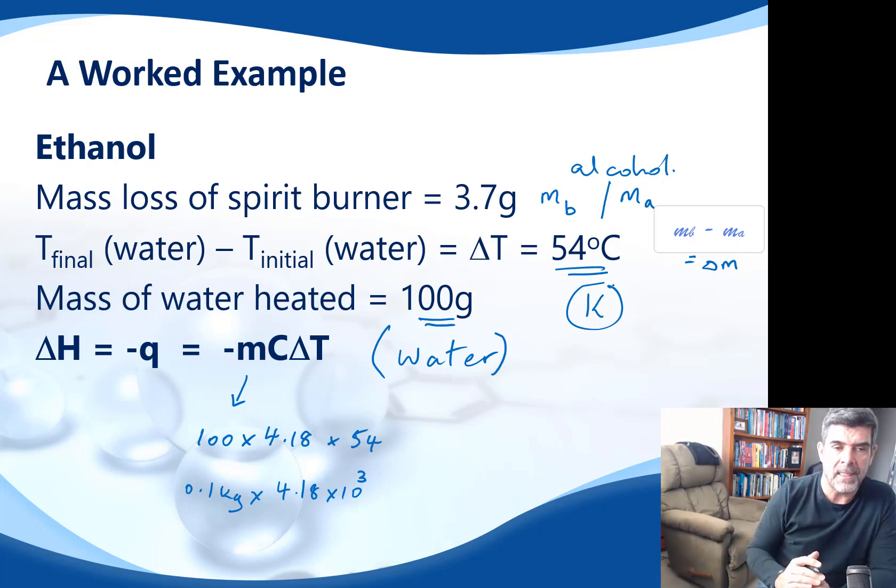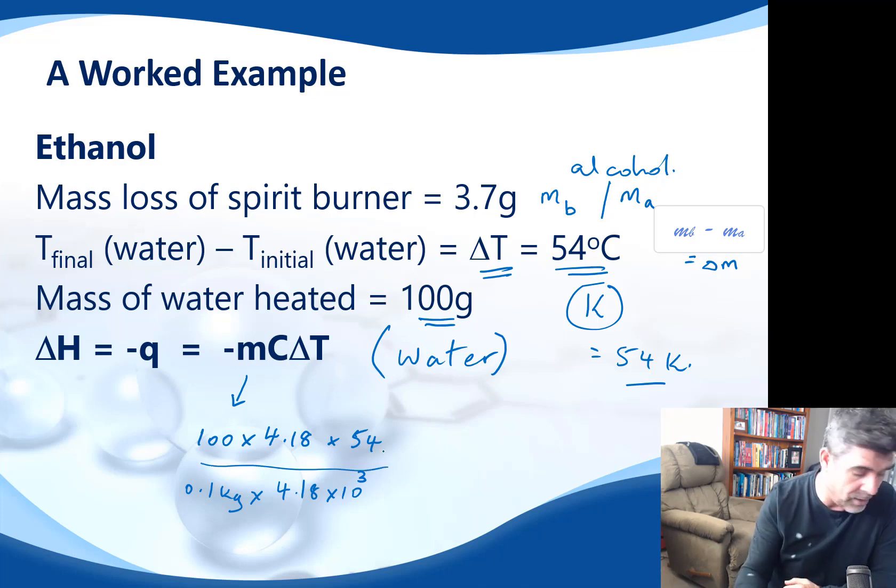But the one thing that we do know is that the Kelvin scale and the Celsius scale both move in equal steps. So, therefore, if we're talking about a change in temperature, then a 54 degrees C change in temperature is going to be equal to 54 Kelvin. The absolute values will be different, but the change will not. So once we have the change in temperature in degrees C, we can easily just convert that into Kelvin. And so that will go into our equation, and when we put those values into our equation, we'll get a certain number.